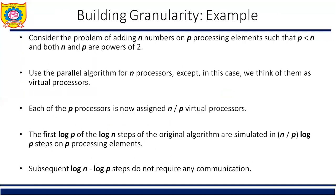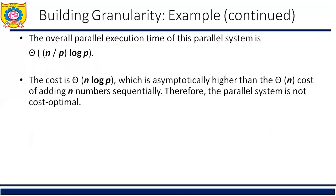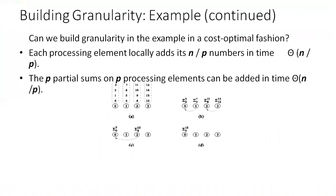Now consider the example of building granularity: adding n numbers on p processing elements. Consider the problem of adding n numbers on p processing elements where p < n and both n and p are powers of 2. We use the same algorithm from the previous example and simulate n processing elements on p processing elements. The figure shows the case for n=16 and p=4. Virtual processing element i is simulated by physical processing element labeled i mod p.